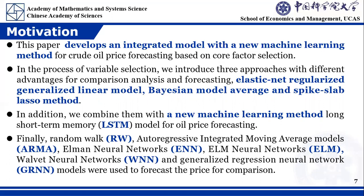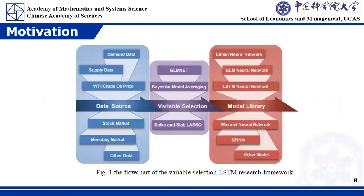In the process of variable selection, we introduce three methods with different advantages for variable compression, analysis, and forecasting: the elastic net regularized generalized linear model (GLMNET), the BMA method, and the SPICS-Lab Lasso method. In addition, we combine them with a new machine learning method — a Long Short-Term Memory (LSTM) model — for oil price forecasting. Finally, random walk, ARMA, ENN, ELM, WNN, and GRNN models were introduced as benchmarks for comparison. Figure 1 shows a flowchart of the variable selection LSTM research framework.